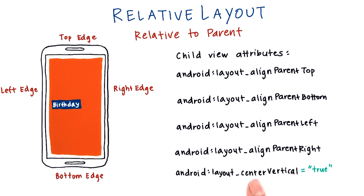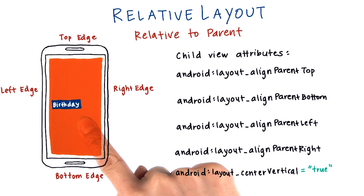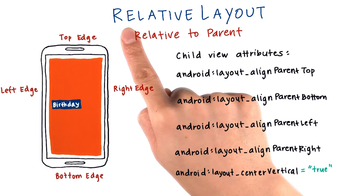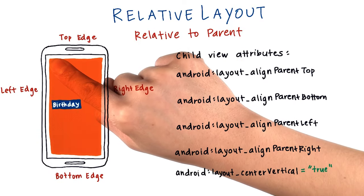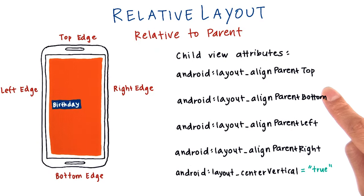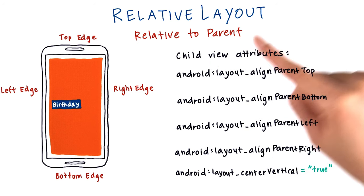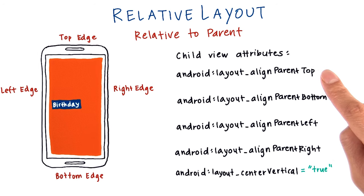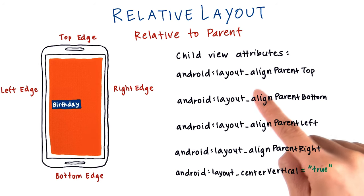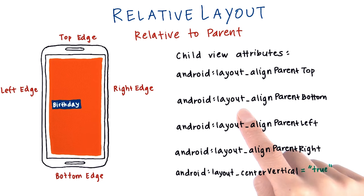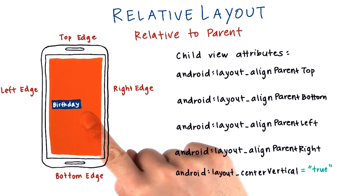The last one I'm going to show you is layout_centerVertical. If this is set to true, then it centers the view vertically within the parent. The reason this text view is aligned to the left edge of the parent even if we didn't set this value is because all views added to the relative layout are positioned by default in the top left corner of the view group. All of these attributes are called view group layout parameters. Even though they're declared on the child XML elements, they're used by the parent view group to know how to position the children. Thus, they all start with layout_. This also follows the pattern of layout_width and layout_height, which you're already familiar with. Those two attributes are also view group layout parameters because they're used by the view group parent to position and size the children.